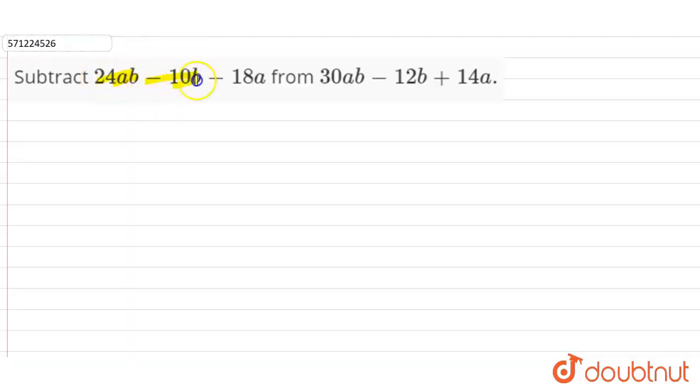24ab minus 10b minus 18a from 30ab minus 12b plus 14a. So we have to subtract this expression from this expression.